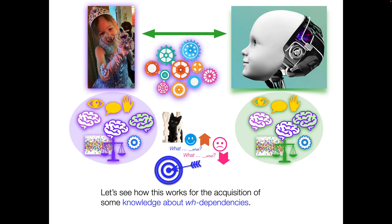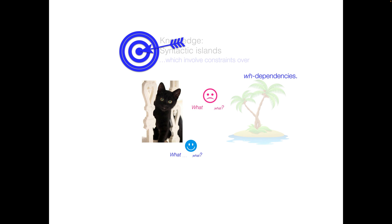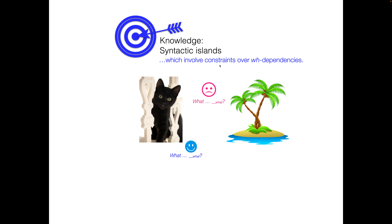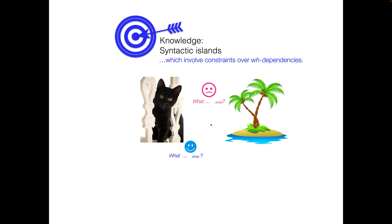Let's talk about how computational cognitive modeling works for the acquisition of knowledge about WH-dependencies. Just to remind you, WH-dependencies are something we talked about a little while earlier. The particular knowledge we're going to focus on are syntactic islands — constraints over WH-dependencies — what dependencies we don't really prefer versus the ones that we do.